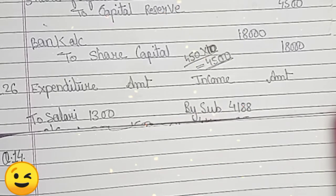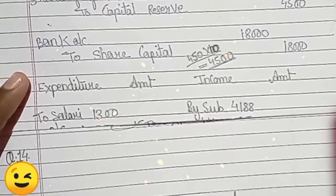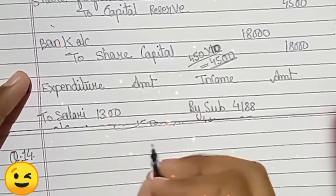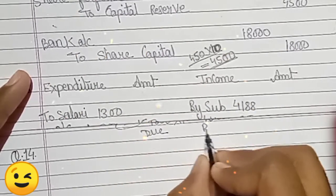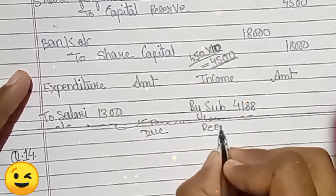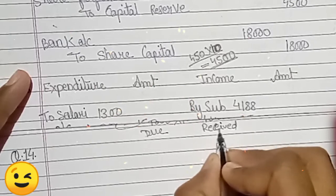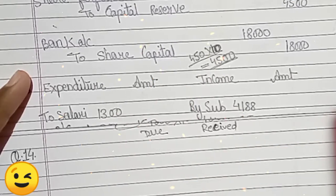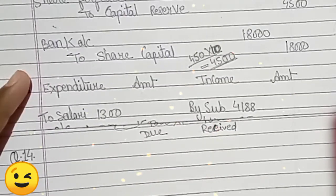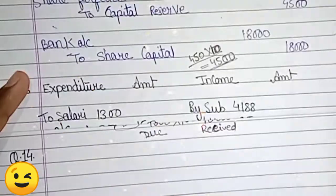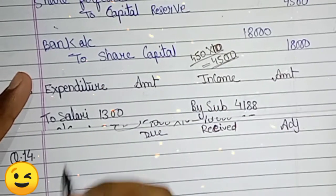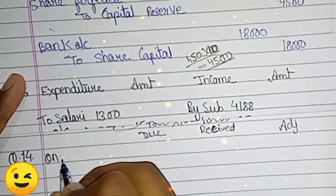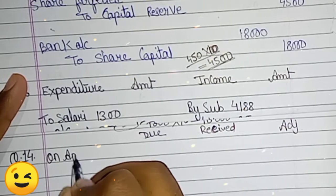So first of all, let's build the analysis table. As you know, here we have columns for Due, Received, and Adjustment. First we look at on application.